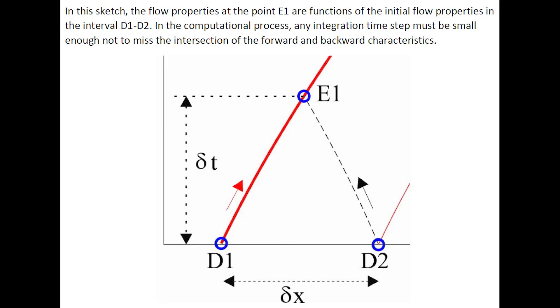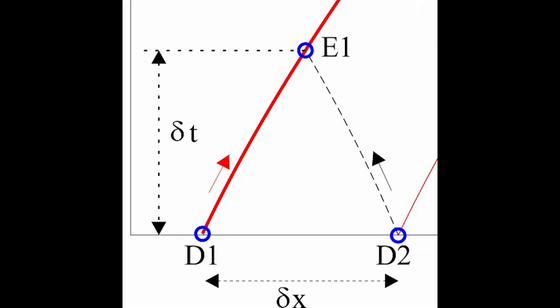In this sketch, the flow properties at point E1 are function of the initial properties in the interval D1-D2. In the computational process, any integration time step must be small enough not to miss the intersection of the forward and backward characteristics.